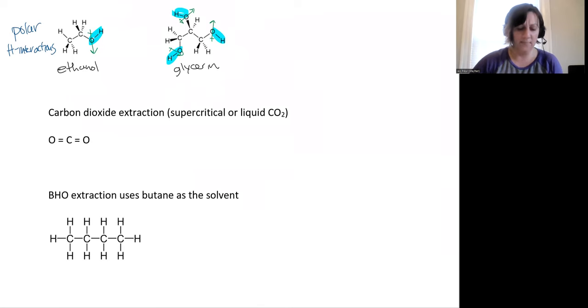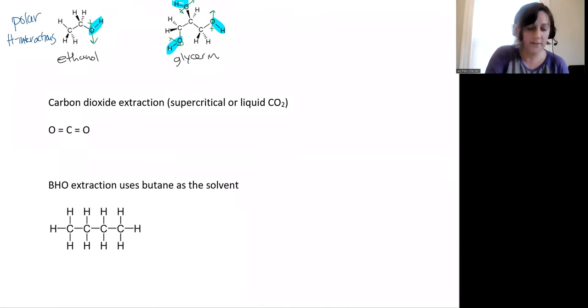And then we have two non-polar compounds, two more. We have carbon dioxide, which is often used to extract cannabis plants as a supercritical fluid or as just a liquid. And that's only accessible when it's under pressure. And so then our gas becomes either a liquid or it becomes a supercritical fluid that has properties of both a gas and a liquid. And it'll act as a solvent. And if plant material is submerged within it under pressure, carbon dioxide is a non-polar compound.